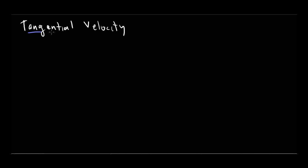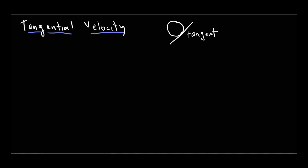Before I get into it, let's think about this word 'tangential.' You can see the root word in there is tangent. A tangent is if you have a circle, and a line that touches that circle in only one place — a line that touches a circle in only one point is called a tangent line.